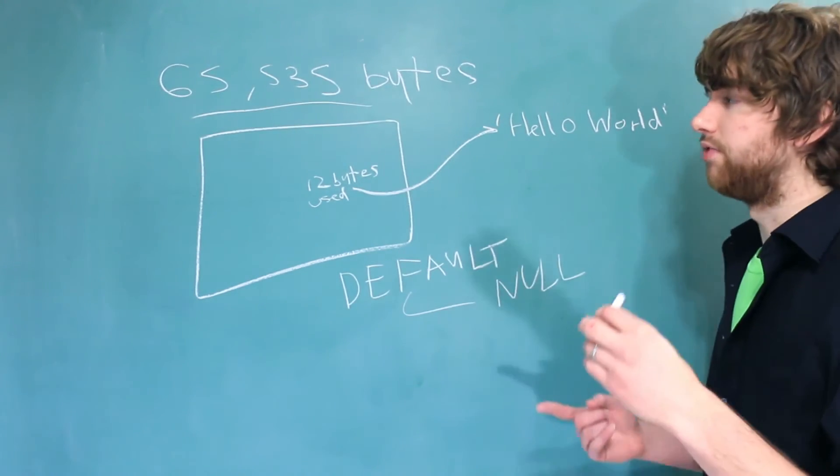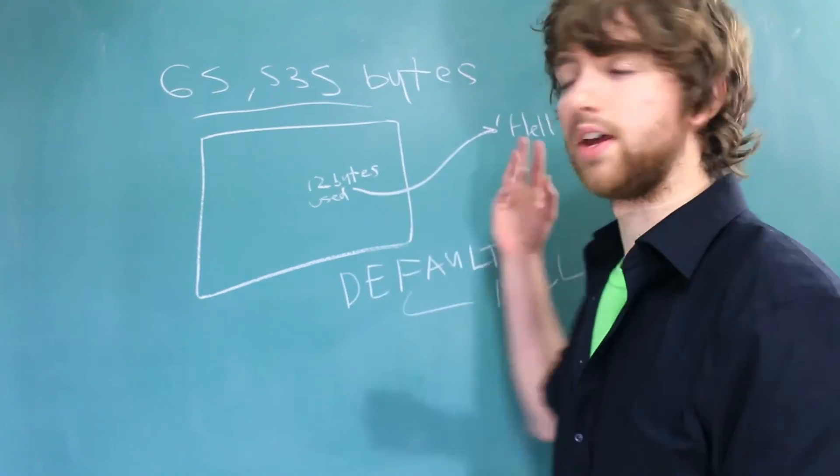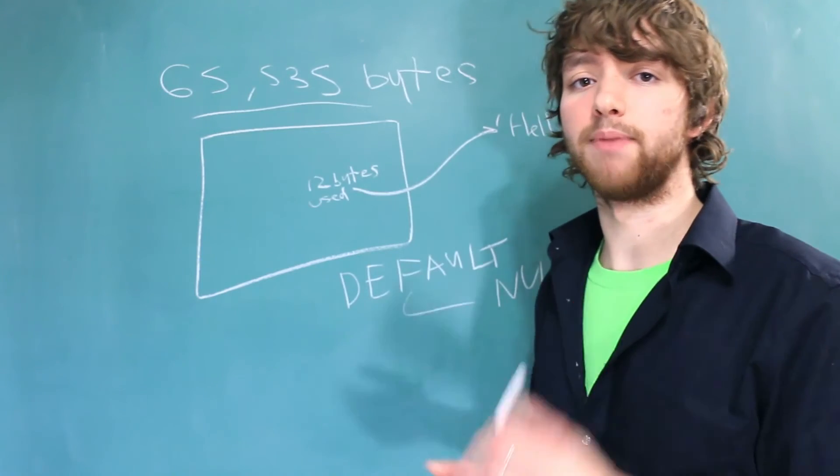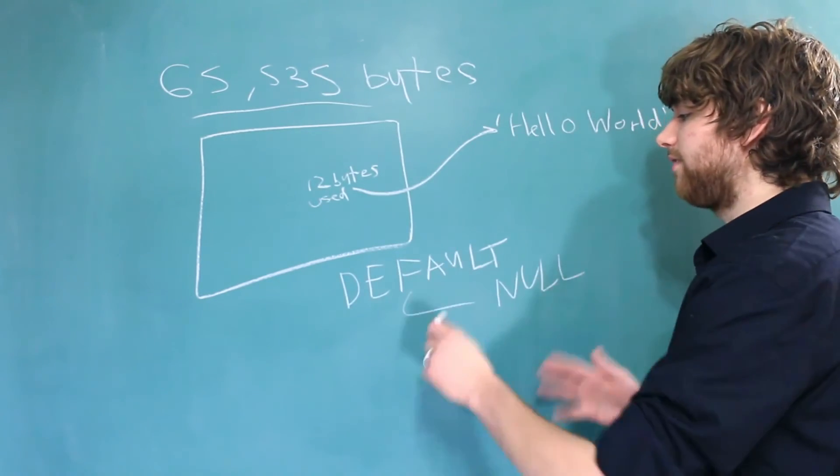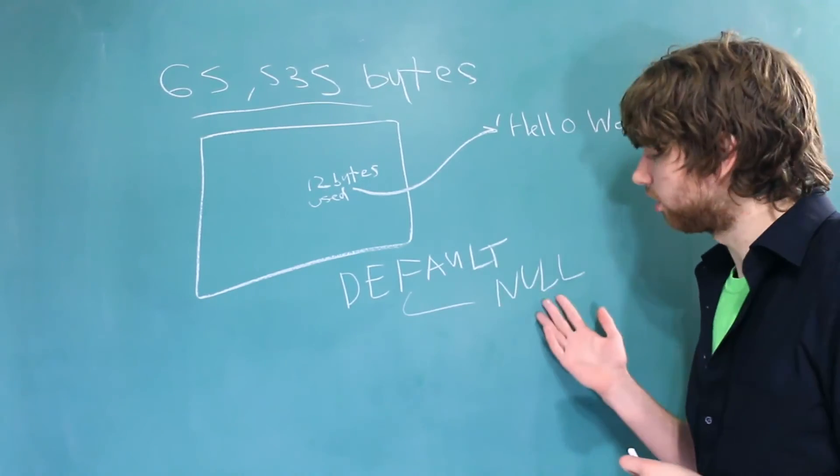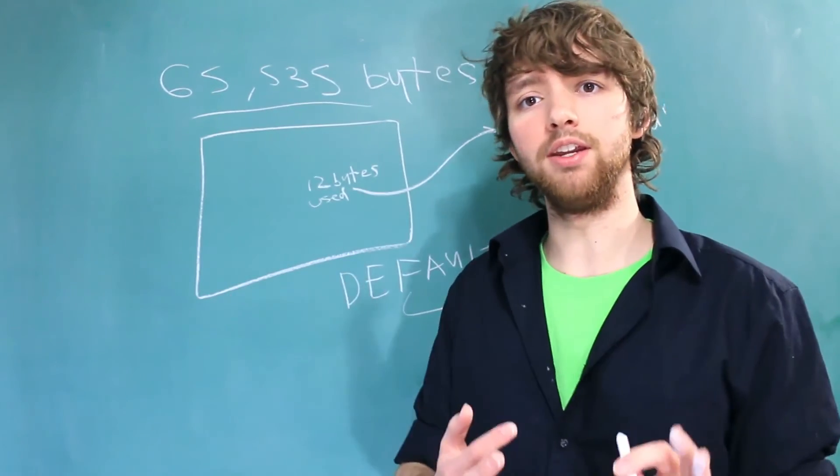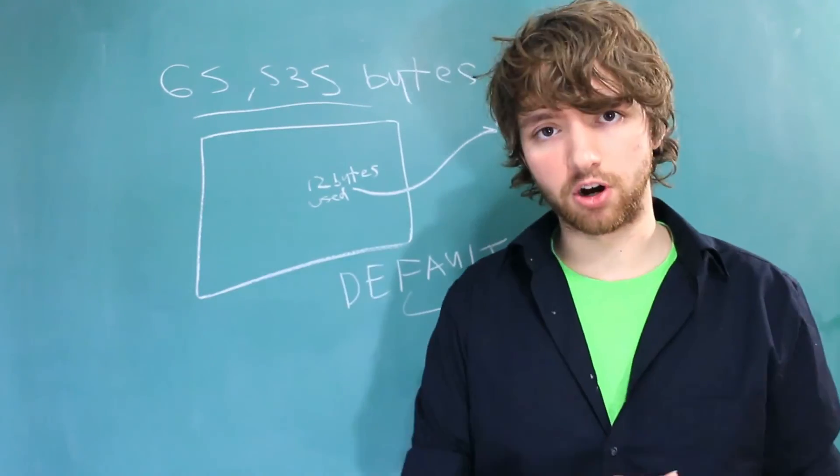So in summary, if you need more data in your rows, you can use text to separate it. Or if you need more data than the maximum varchar, you can use text. And finally, you can set a default in varchar that's not null, but you can't do that in text. So if any of those situations fit what you need, then you would know that you need to switch over to text or to varchar.